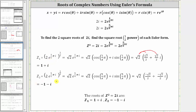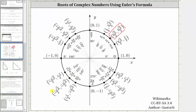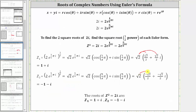For the second root, when multiplying the exponent on e by one half, we get e raised to the power of five fourths pi i. Converting to polar form, we need the cosine and sine values for five fourths pi radians, which are both equal to negative square root two divided by two. Distributing square root two, we get negative one minus i.